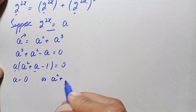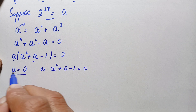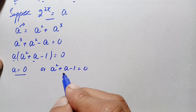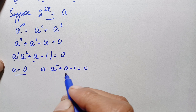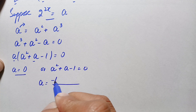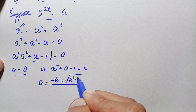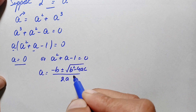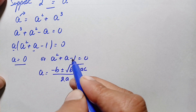From the factored equation, a = 0 is the first solution. For the other two values, we cannot factorize a² + a − 1, so we use the quadratic formula: a = (−b ± √(b² − 4ac)) / (2a). Here, the coefficient a = 1, b = 1, and c = −1.